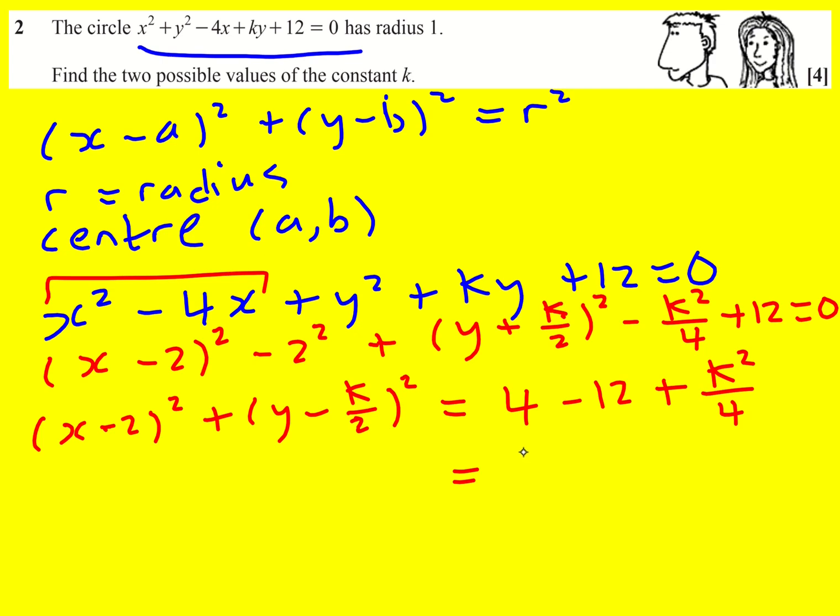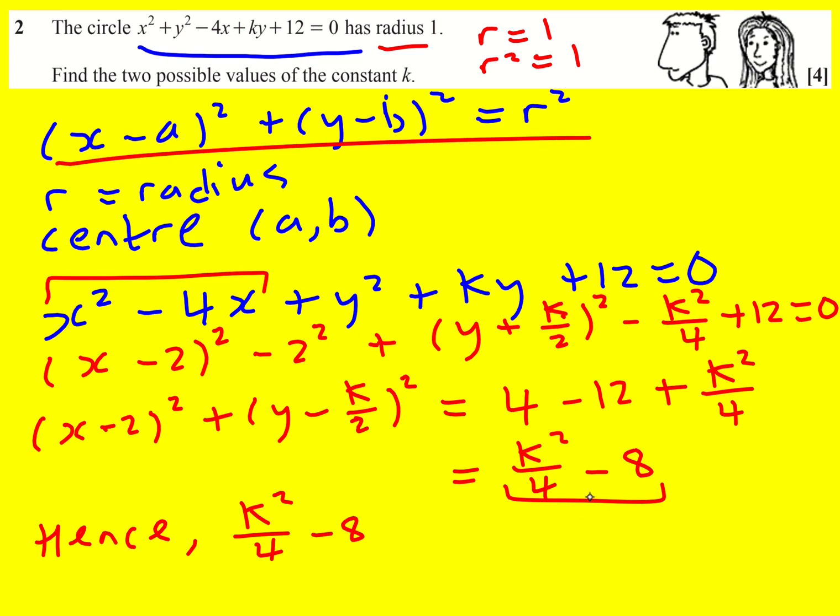And let's just sort this bit out. It's going to be k squared over 4 minus 8. So r equals 1 and also r squared is going to equal 1. Hence k squared over 4 minus 8. This is my r squared by the way as well because I've now got it in the right form. I've got it in this form here. So this is r squared and this is going to equal 1.